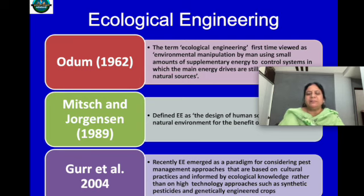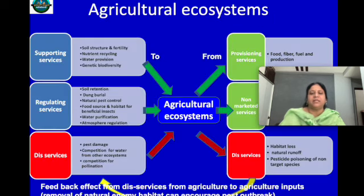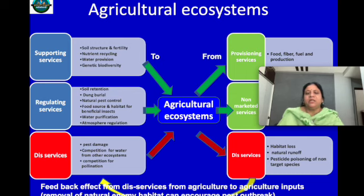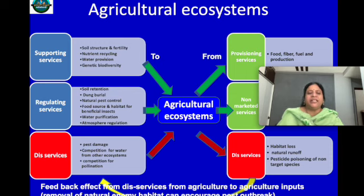Almost all principles of ecological engineering and organic farming are the same. Here we consider the agricultural ecosystem as a holistic ecosystem having different services: provisioning services, non-marketed services, and supporting services like soil structure and fertility, nutrient recycling, water provision, and genetic biodiversity. It also has regulating services like soil retention, dung burial, natural pest control, food source and habitat for beneficial insects, water purification, and atmosphere regulation.